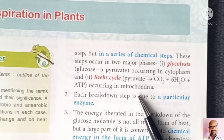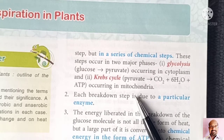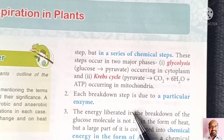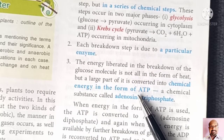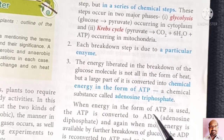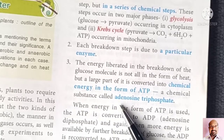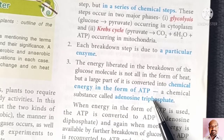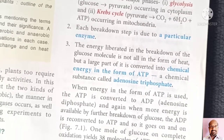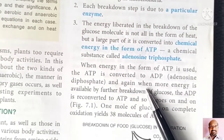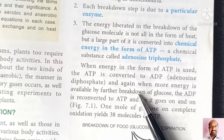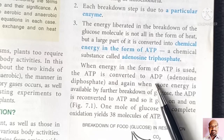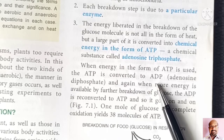Secondly, for every breakdown step, a particular kind of enzyme is required. The energy liberated in these breakdowns includes heat energy and chemical energy in the form of ATP — adenosine triphosphate. When this ATP energy is utilized by the body, it is converted into ADP, that is adenosine diphosphate.